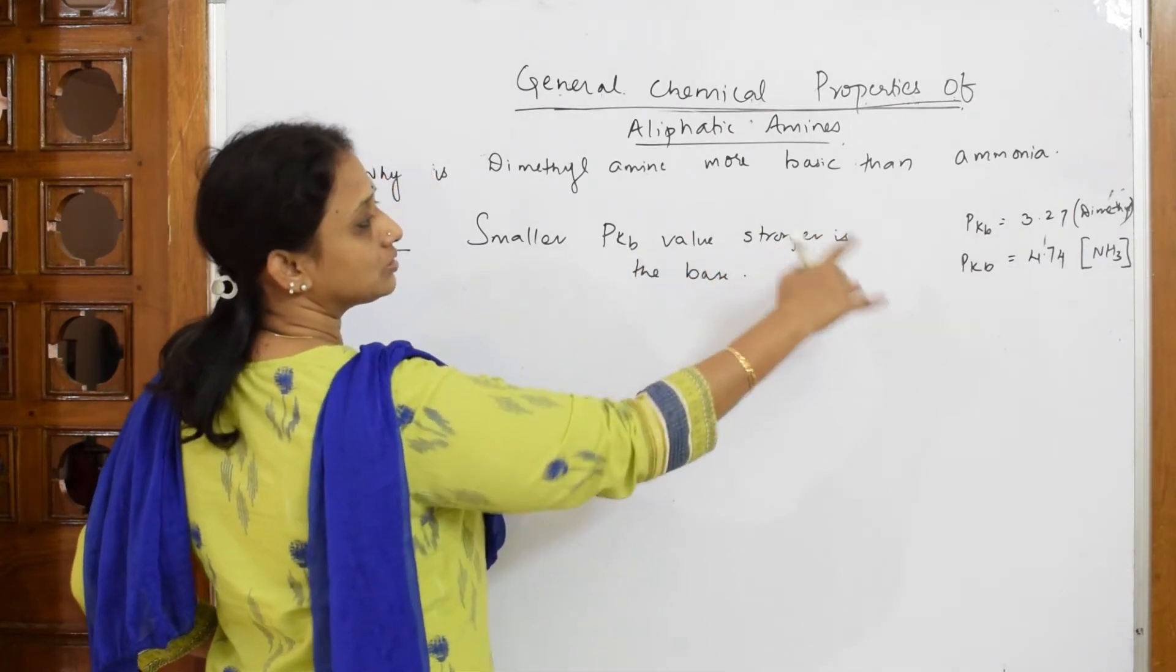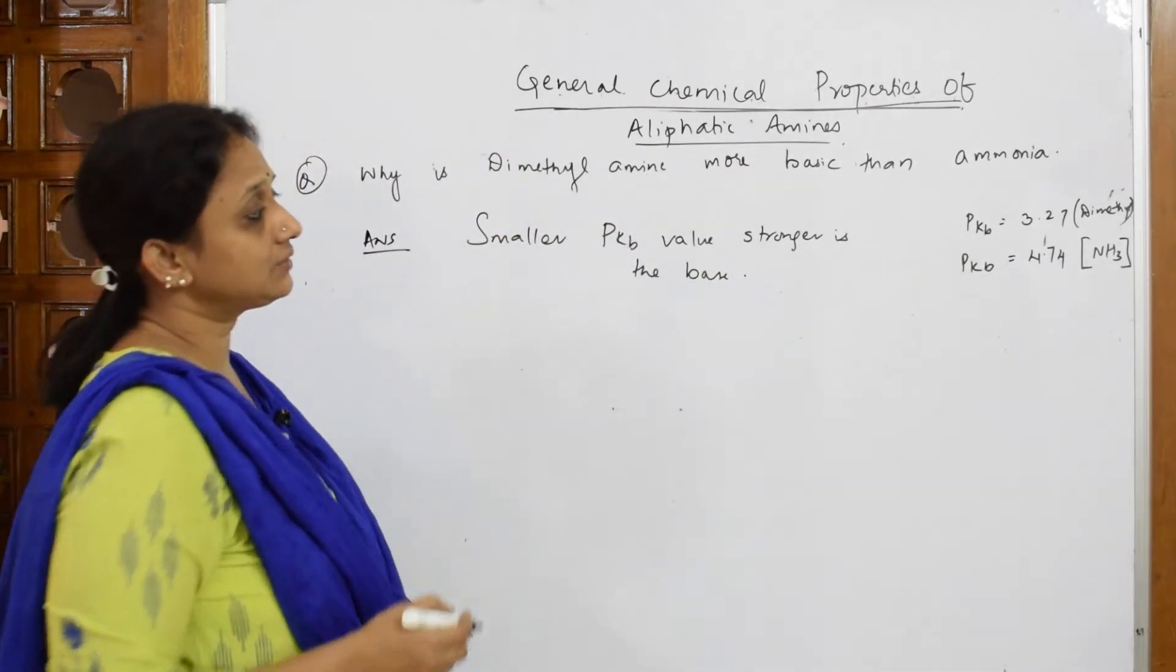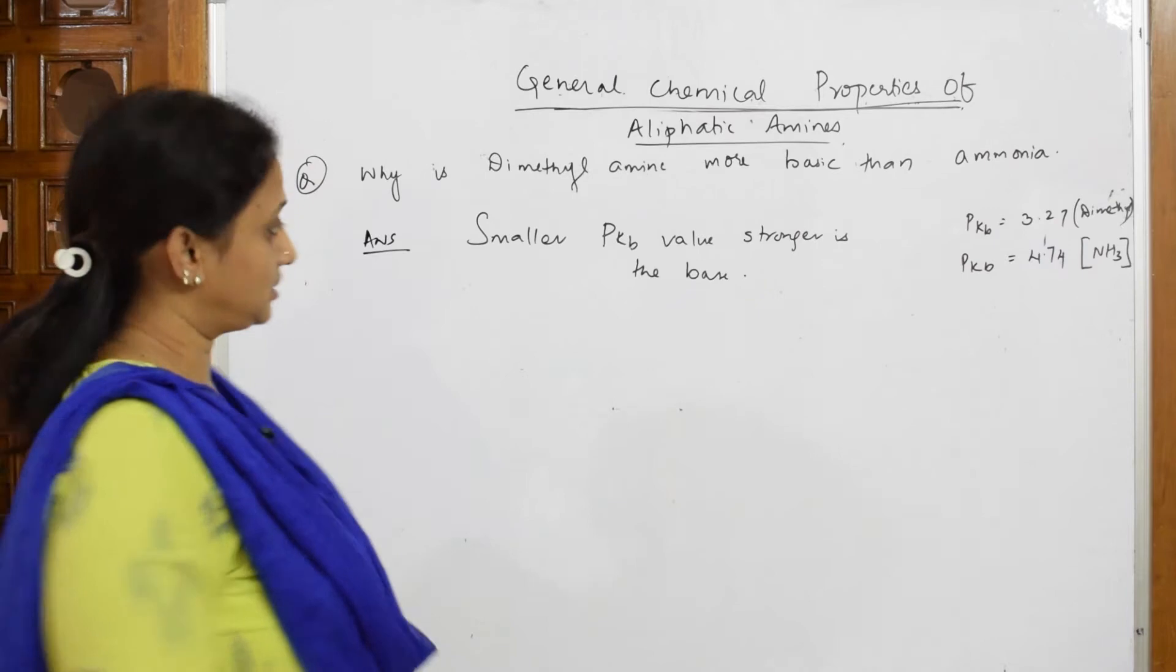In both the things, first one is for dimethyl amine 3.27. Second one is 4.74 for ammonia. Simple.